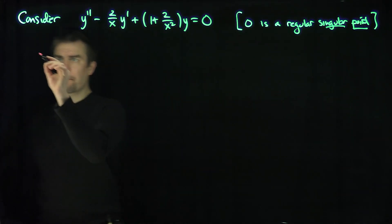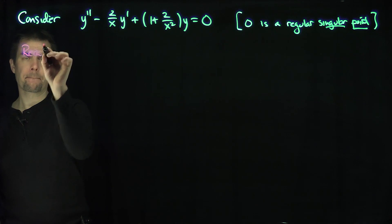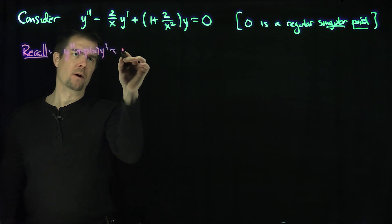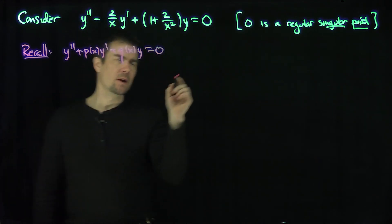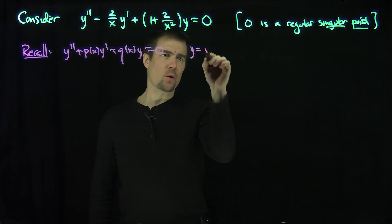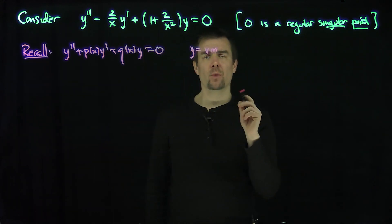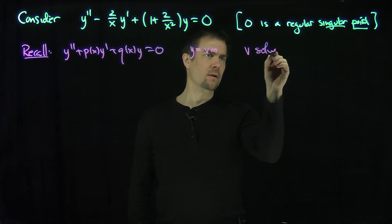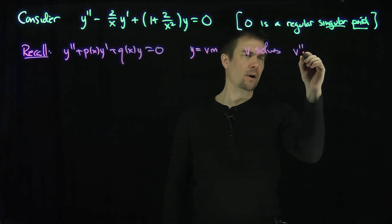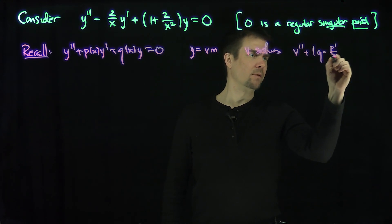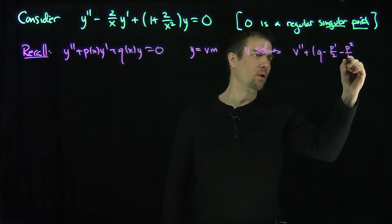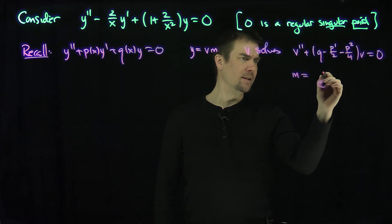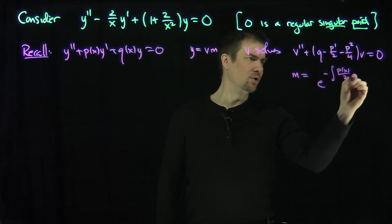Recall, if we have y'' + p(x)y' + q(x)y = 0, then we let y = vm. We know that v solves v'' + (q - p'/2 - p²/4)v = 0, when m = e^(-∫p(x)/2 dx).